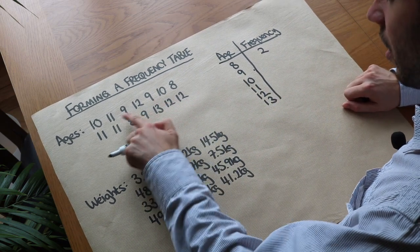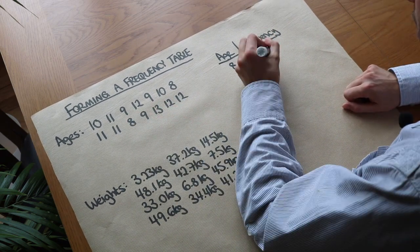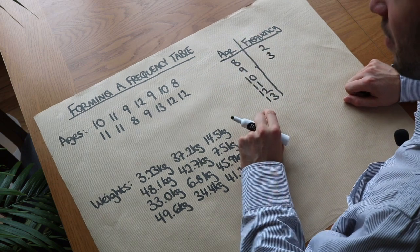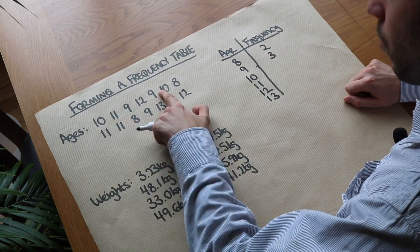So how many times does an age of nine occur? One, two, three times. How many times does an age of ten occur? Once, twice.